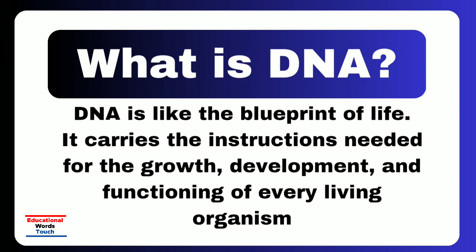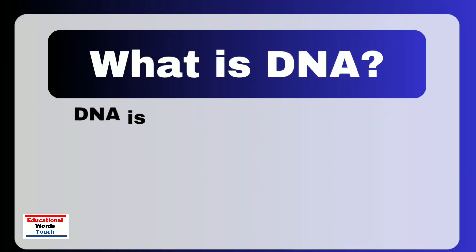Structurally, DNA looks like a double helix — a twisted ladder. The sides of the ladder are made of sugar and phosphate, and the rungs are made of four chemical bases. The bases pair up in a very specific way: A with T, and C with G. This sequence is what stores genetic information.